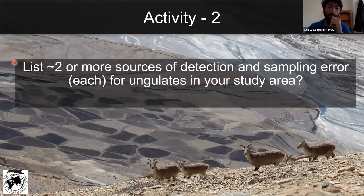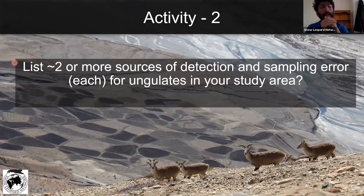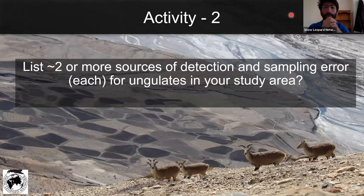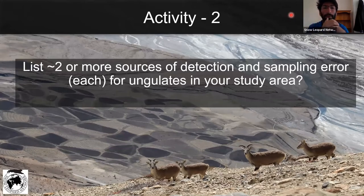Quick activity now — people can type in the chat or open their mics and speak up. Can you list two or more sources of detection and sampling error — preferably two detection errors and two sampling errors — for mountain ungulates in your study area or area of knowledge? Think about the ungulates you might be interested in; they don't necessarily have to be ungulates in a specific landscape, but think about mountain ungulates. What might affect detection and sampling error?